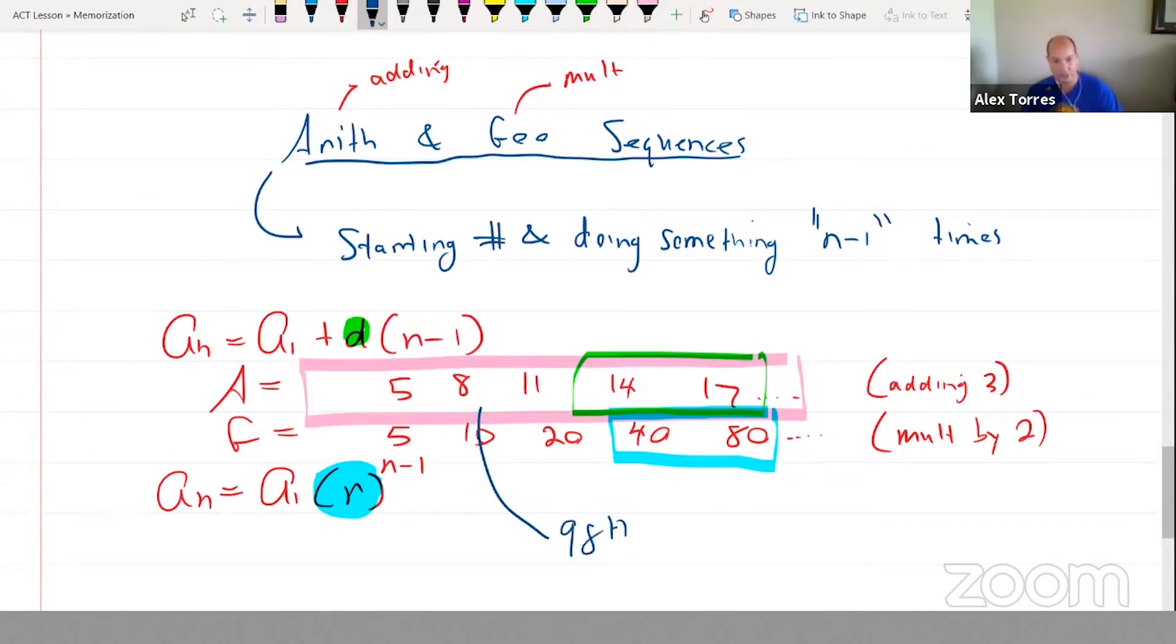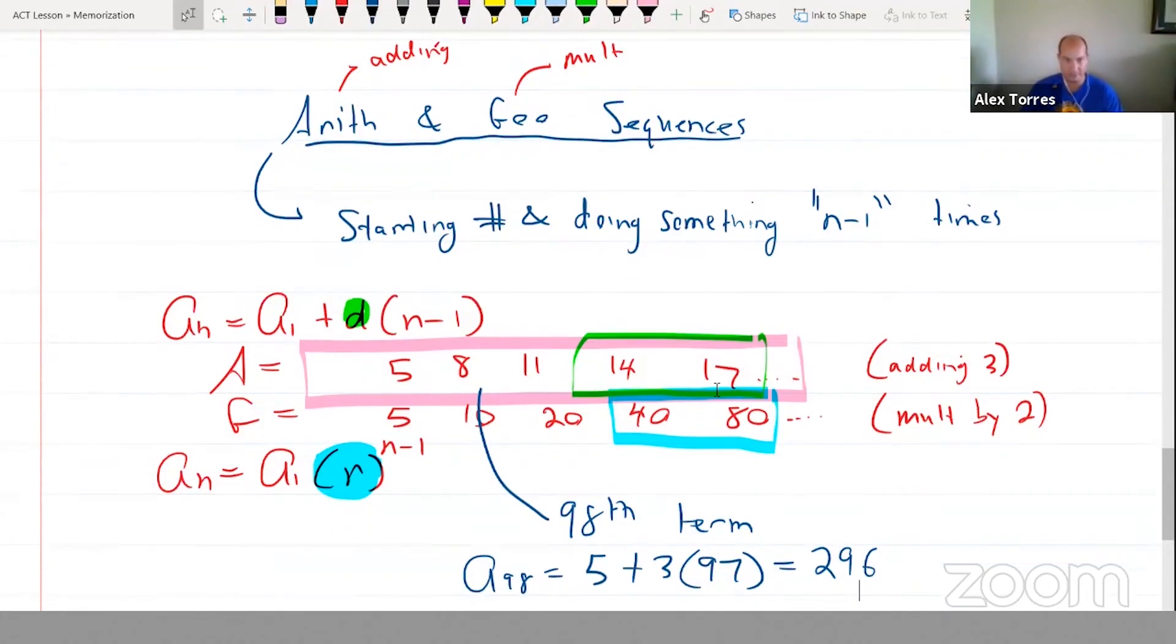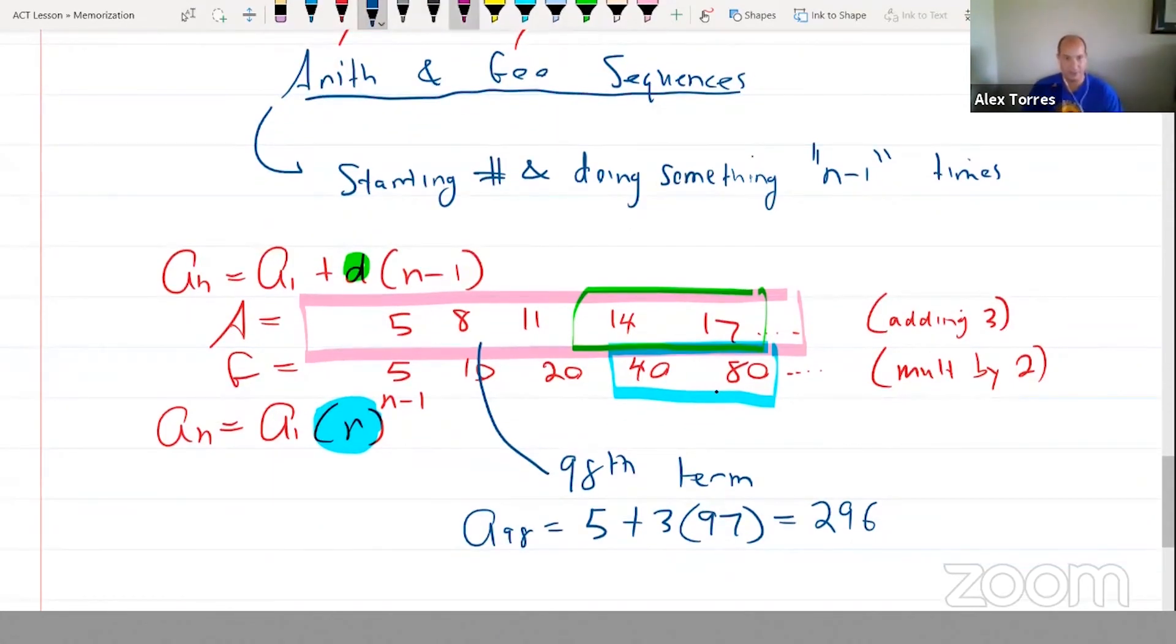So what's the 98th term? a₉₈ is equal to a₁, the first term, 5, plus the thing that we're adding, 3, n minus 1 times. So 98 minus 1, n is the number of the term you're talking about, so 97 times. So 98 minus 1, and so that's whatever you get for 5 plus 3 times 97. And that comes out to 296. So the 98th term of the sequence that I just highlighted in pink there is actually 296.